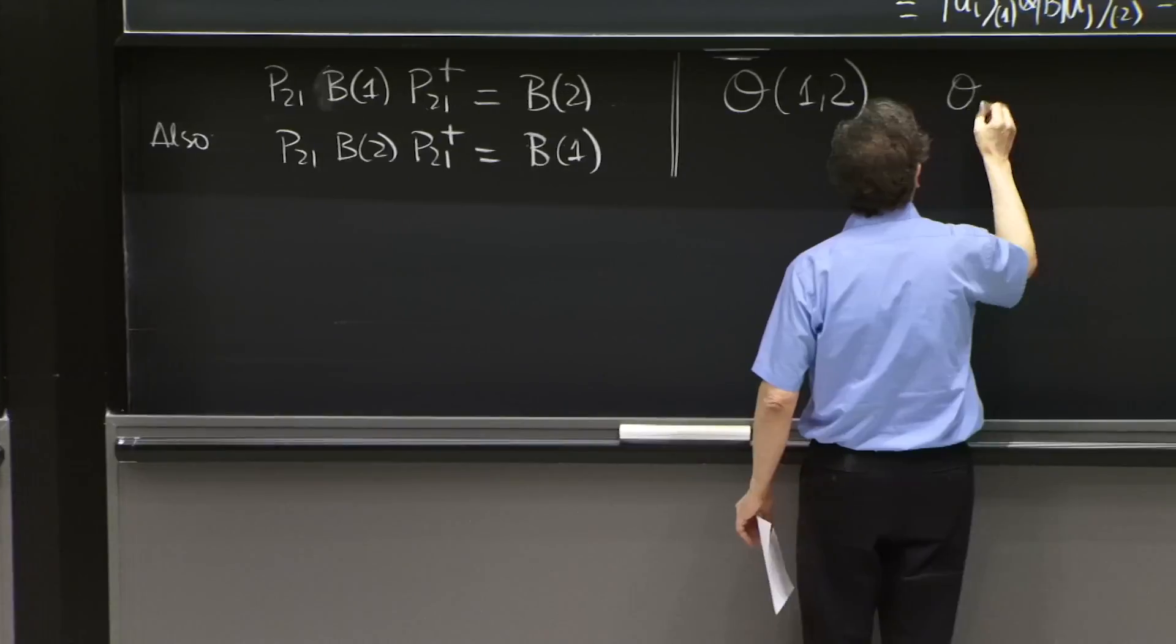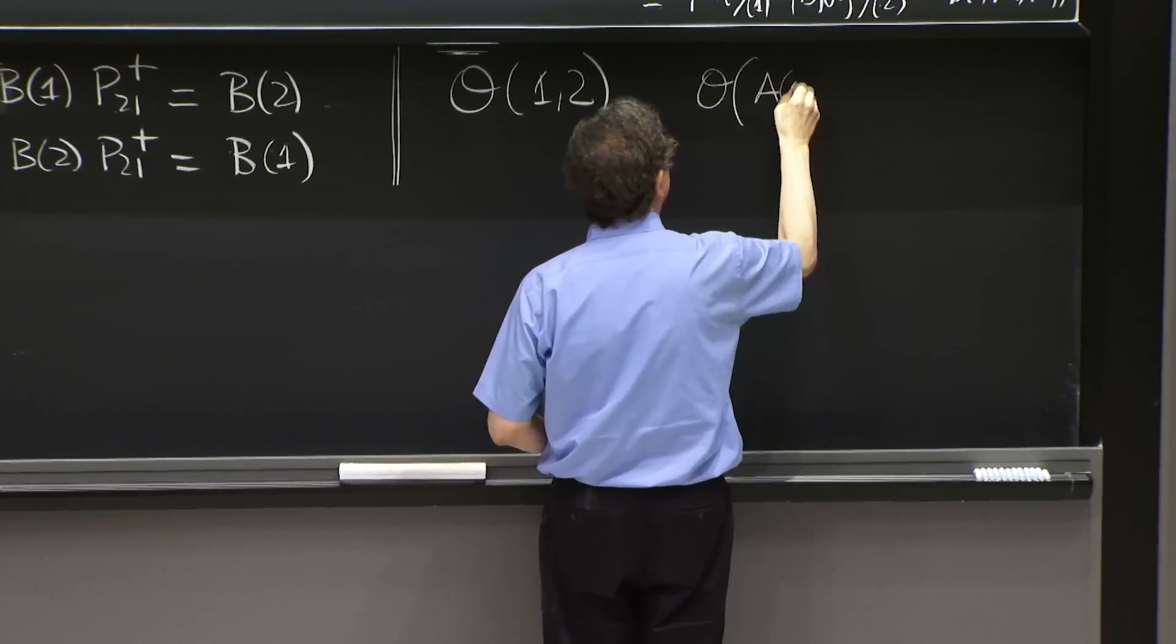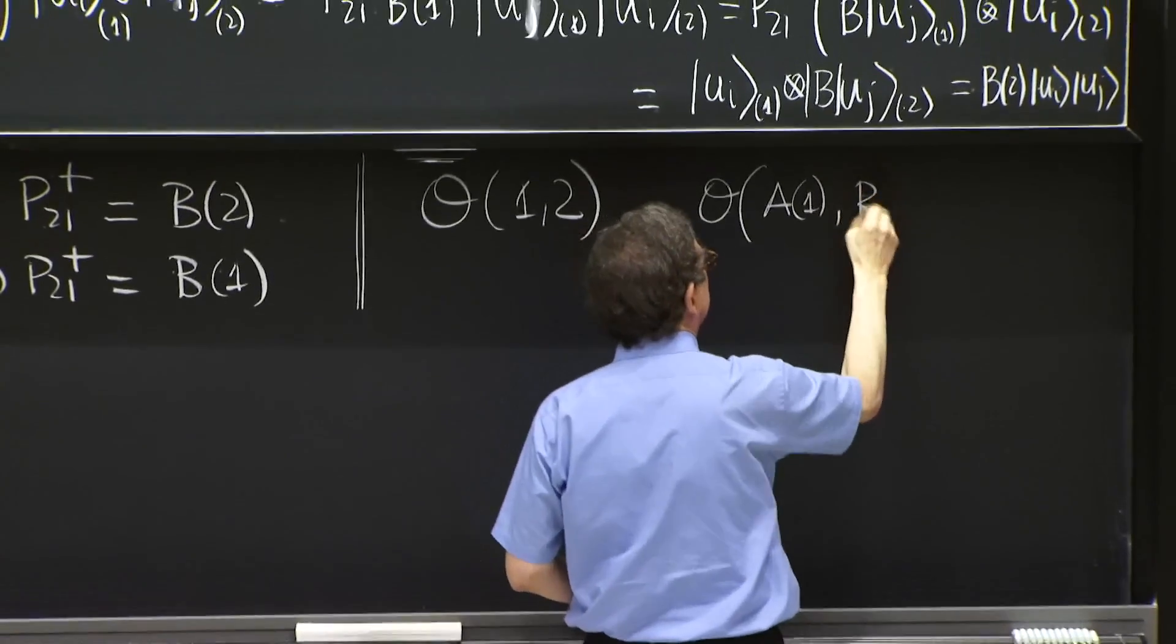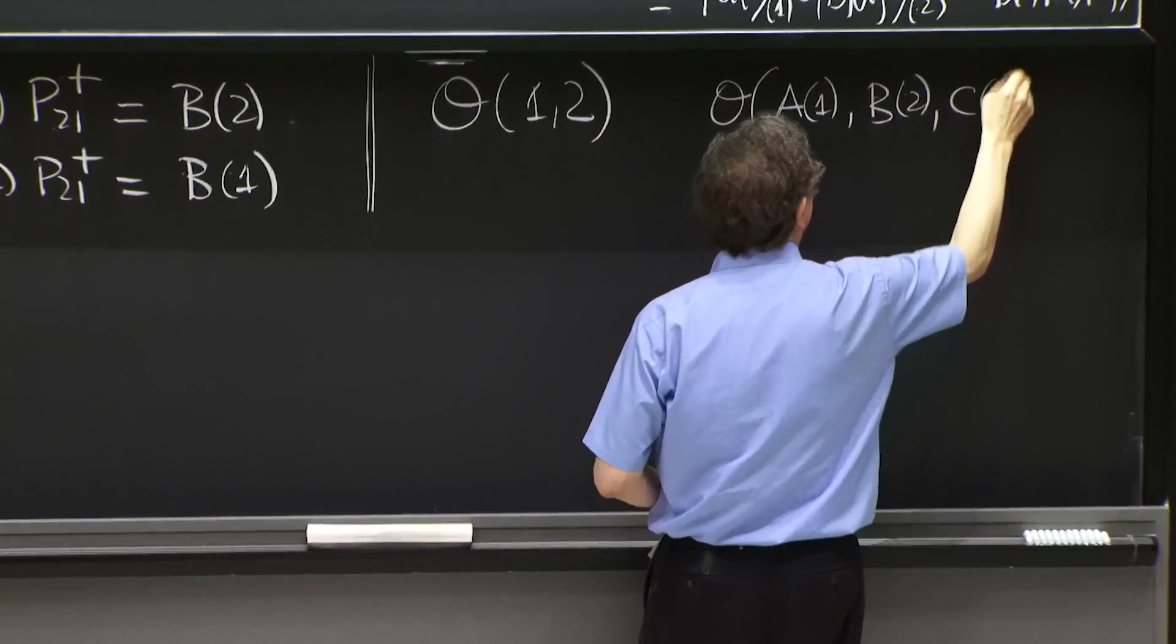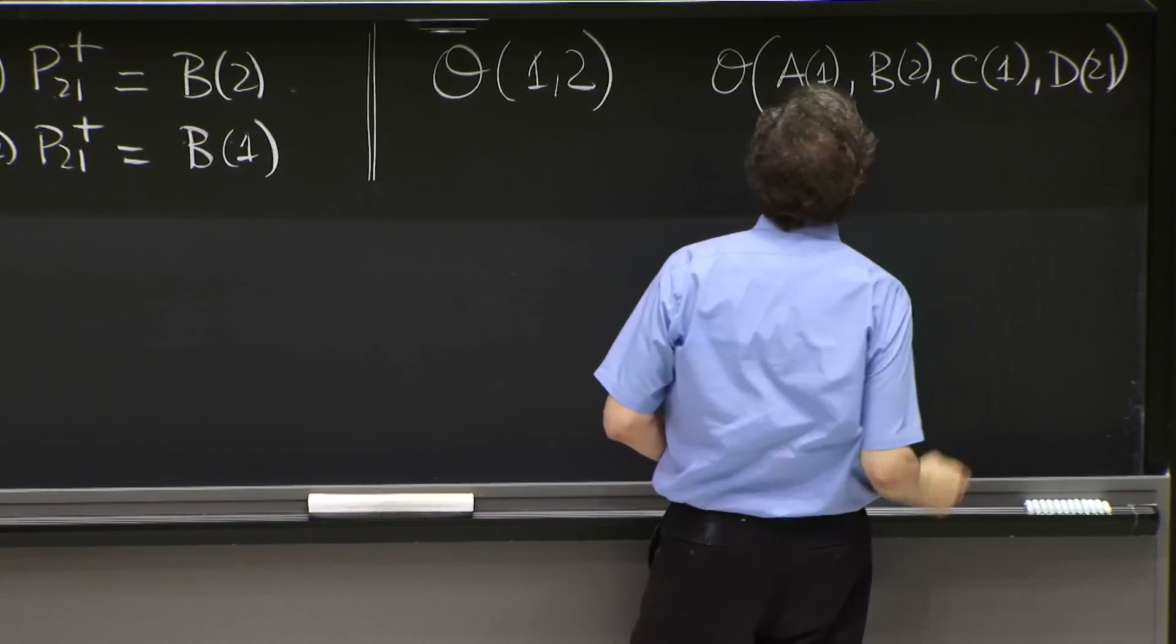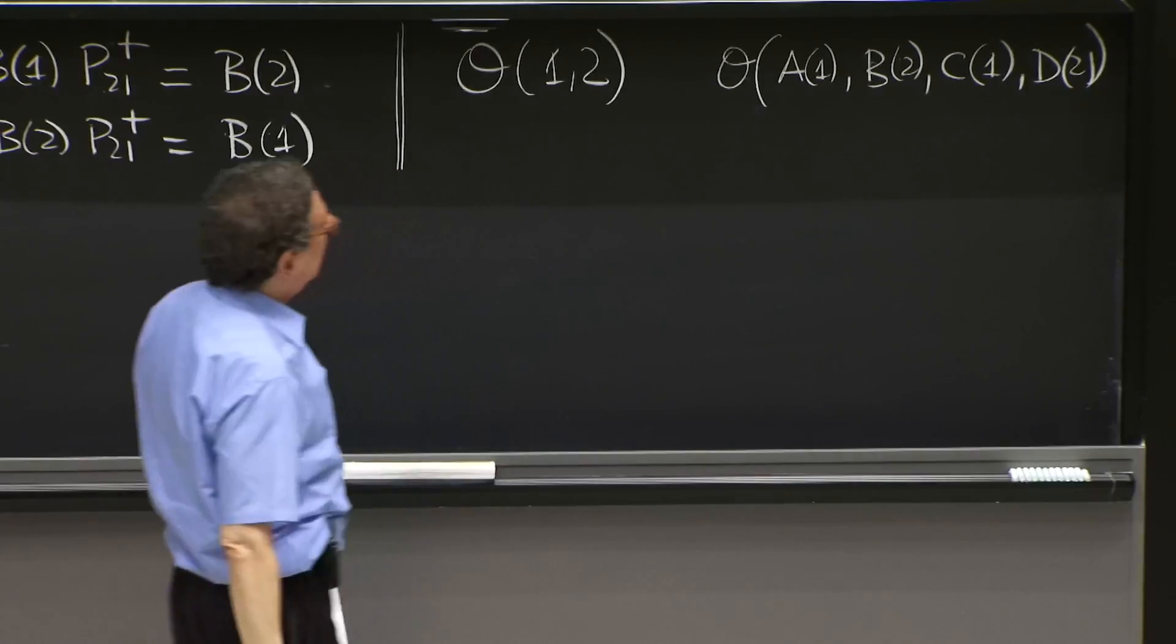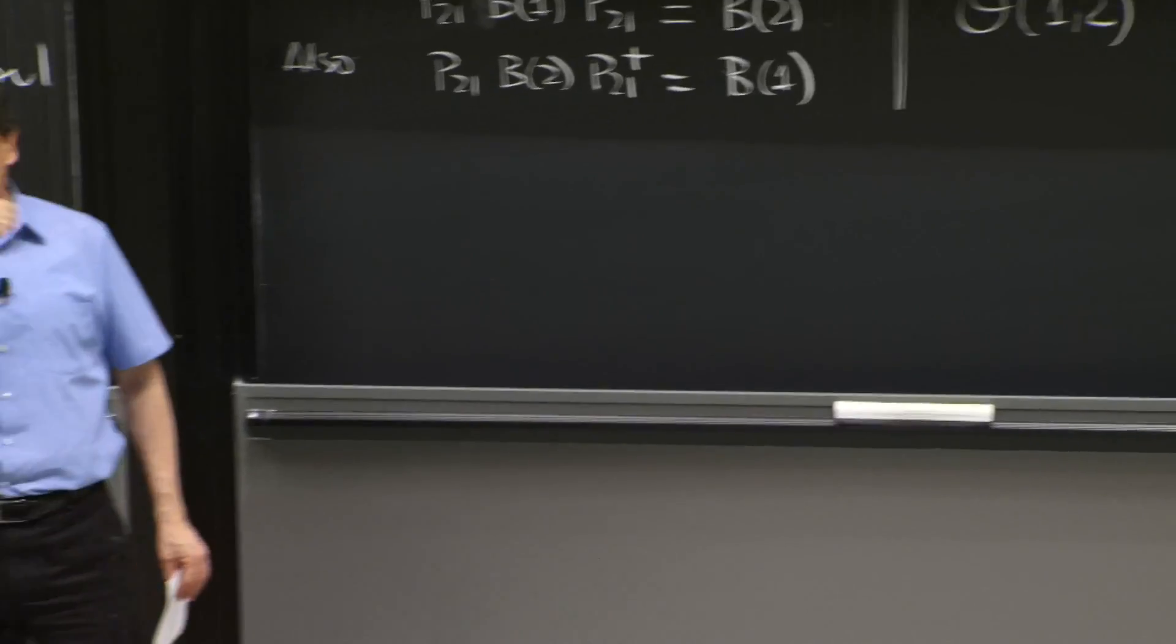So if you want to imagine it, it could be an O that depends on the operator A acting on the first label, an operator B acting on the second label, an operator C on the first label, an operator D on the second label. Could be a very complicated product of those operators acting on all kinds of labels.